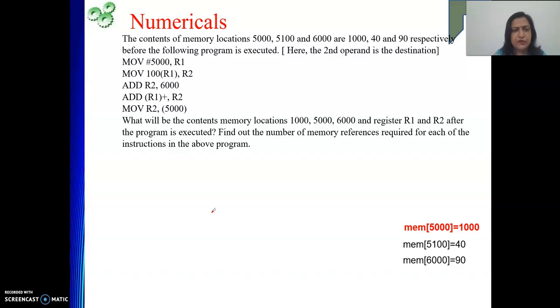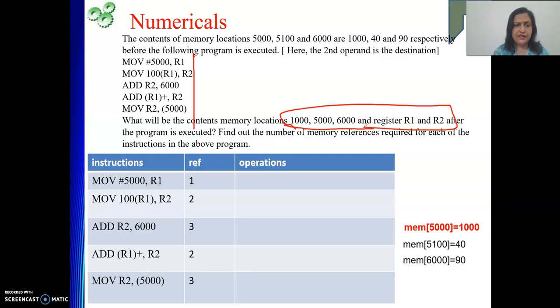Now next part also will do it very quickly. See, these values are given. What we are supposed to do after executing this instruction, we need to find these values. So let's first execute it. So see, this part is already there. Already I have discussed. This is 1, 2, 3, 2, 3. We have seen.